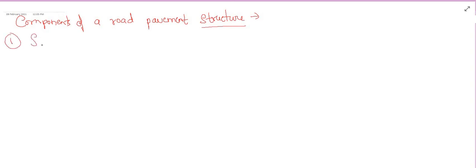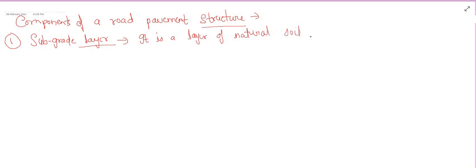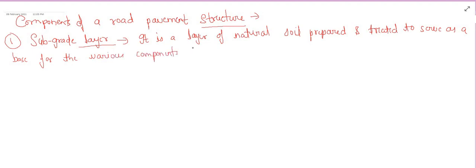The first layer we have seen in the two pavement types is the subgrade layer — the bottommost layer. The subgrade layer is made from natural soil which is prepared and treated to serve as a base for the various components of pavement materials.